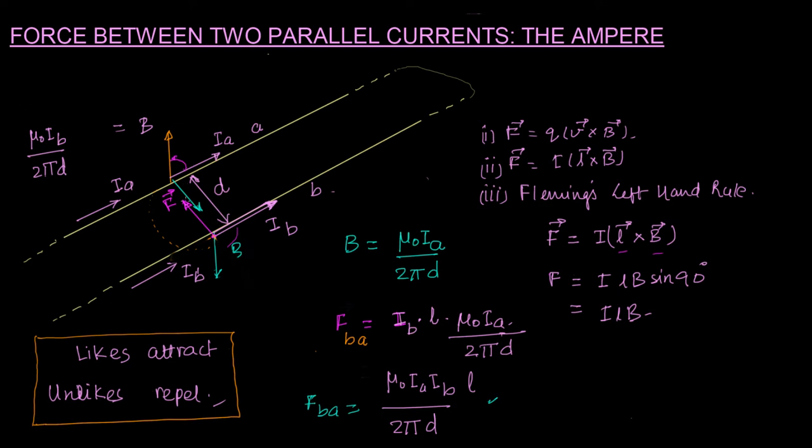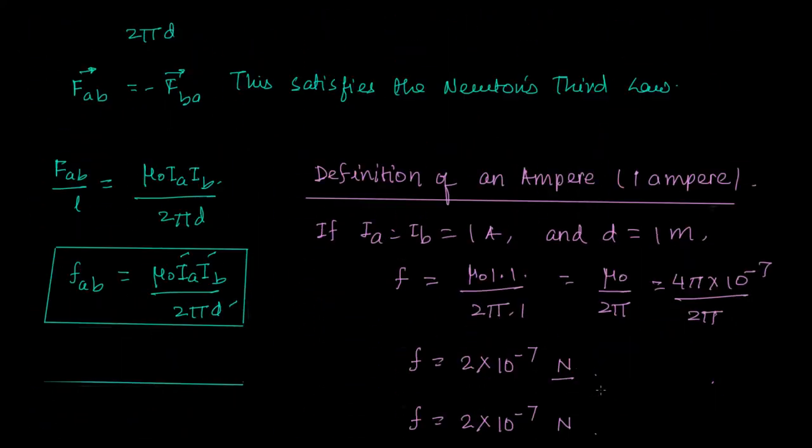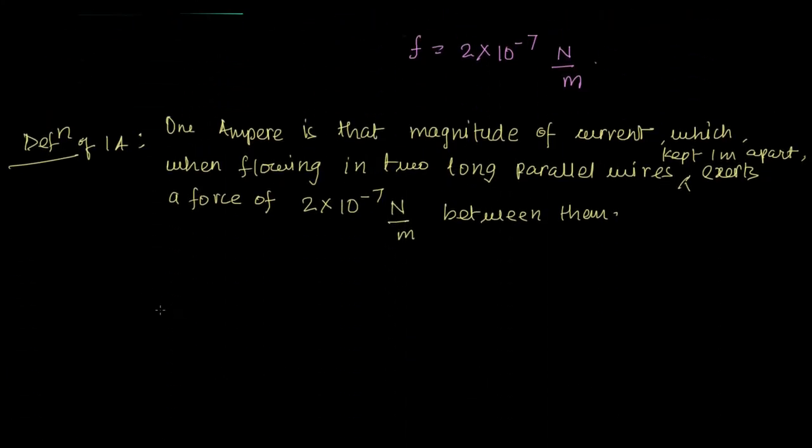Now while doing this, since these are very small fields and the forces are very small, the Earth's magnetism should be eliminated while doing this measurement. So the first precaution that we should take is that the Earth's magnetism has to be taken into account. Earth's magnetism should be factored in.